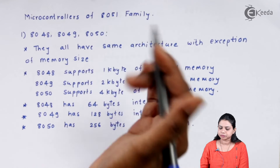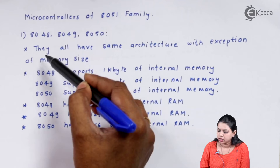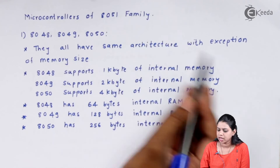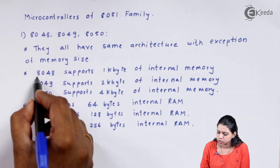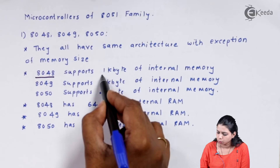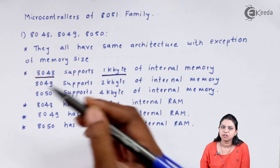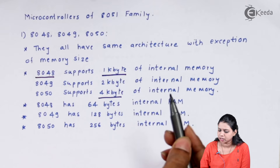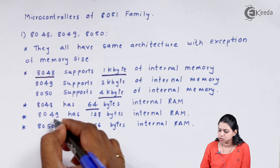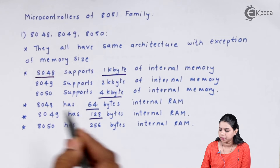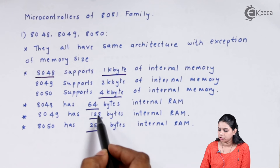8048, 8049, and 8050 all have the same architecture, with the exception of memory size, and the memory doubles in every case. 8048 supports 1 kilobyte of internal ROM memory, 8049 supports 2 kilobytes, and 8050 supports 4 kilobytes. For internal RAM: 8048 has 64 bytes, 8049 has 128 bytes, and 8050 has 256 bytes. So everywhere the memory gets doubled.